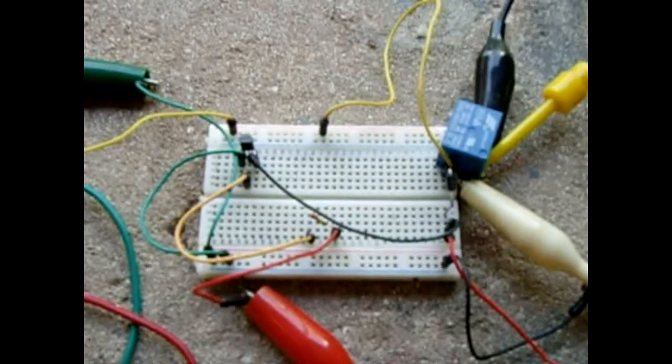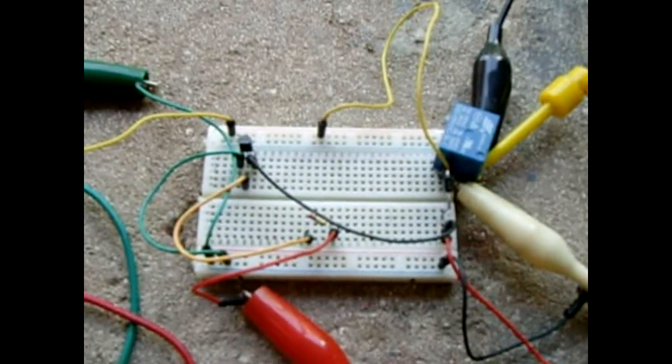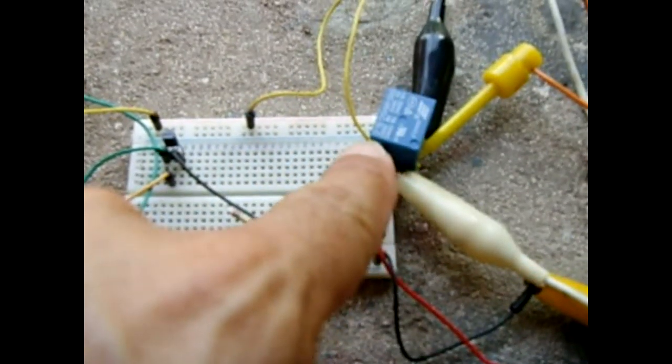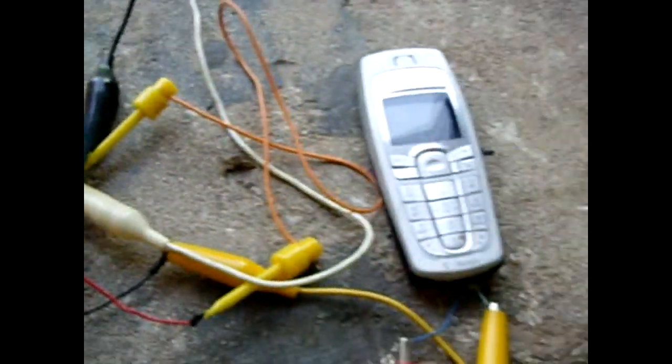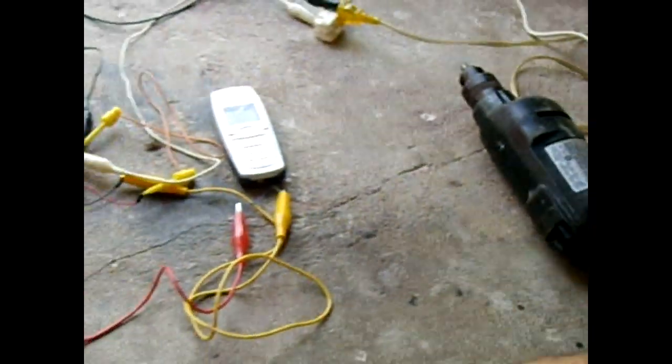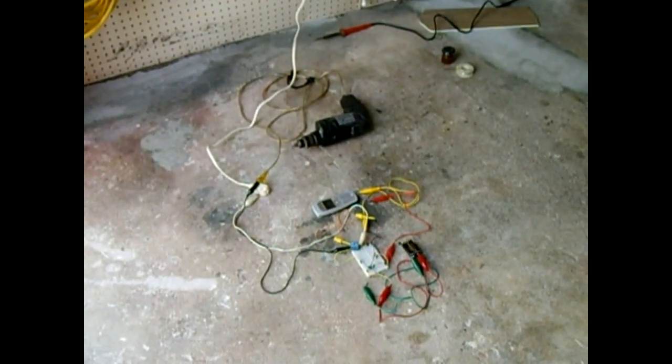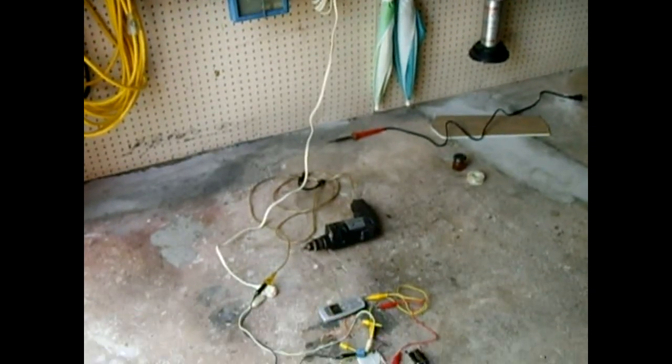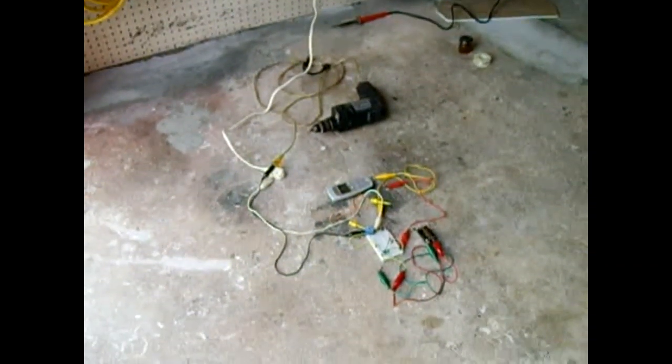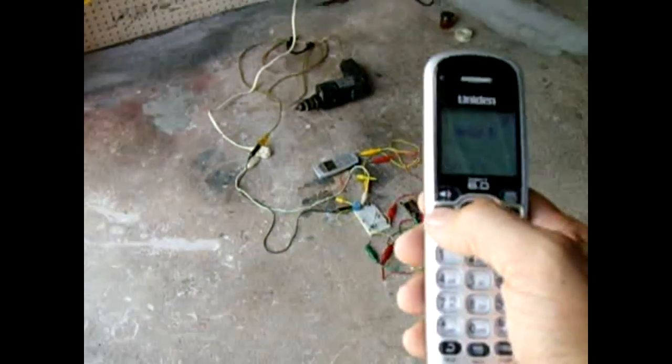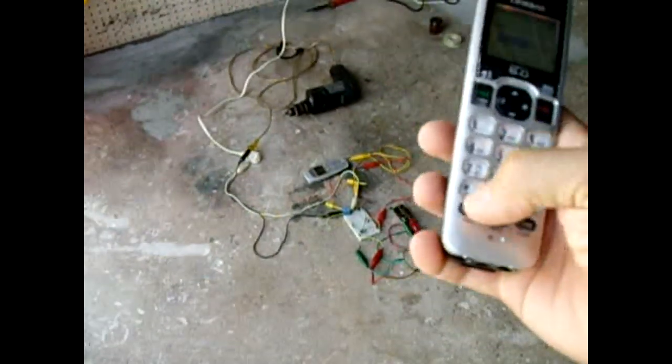Once the phone rings, the relay will close, and in this case, the circuit that would be triggered is going to be this drill. Okay, I'm going to demonstrate right now. You can see it's plugged into the wall receptacle. I have a drill laying on the floor next to the cell phone and the circuit. Phone in my hand, I'm going to dial my phone.